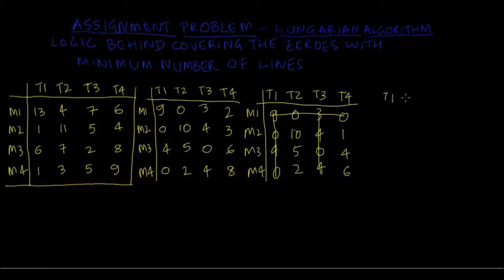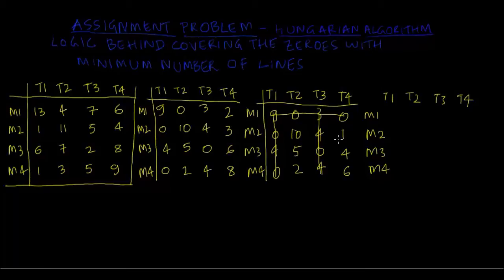What we do is pick the least among the uncovered numbers and then deduct all uncovered numbers by that number, then add to the intersection points. The uncovered numbers are identified and 1 is the least. So I deduct 1 from all six uncovered numbers including itself, generating a new zero. Then I add 1 to the two intersection points, getting 10 at one intersection and 4 at the other, with zeros remaining as usual.